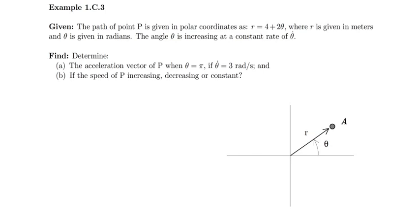In this problem we're told that the path of point P is given in polar coordinates as r equals 4 plus 2 theta, where r is in meters and theta is in radians. We're also told that the angle theta is increasing at a constant rate theta dot. We're asked to determine the acceleration of P at a certain angle theta and value for theta dot, and also determine if the speed of P is increasing, decreasing, or constant at this instant.